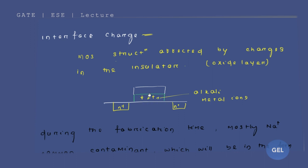Here you have some alkali metal ions available. Your alkali metal ions will be available on the oxide layer. Oxide layer is nothing but your insulator. So in this insulator during the fabrication time, mostly the Na plus alkali metal ions will be available like contaminant.